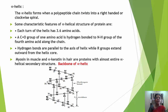The alpha helix forms when a polypeptide chain twists into a right-handed or clockwise spiral. Characteristic features: each turn of the helix has 3.6 amino acids. A CO group of one amino acid is hydrogen bonded to the NH group of the fourth amino acid along the chain. Hydrogen bonds are parallel to the axis of the helix, while R groups extend outward from the helix core. Myosin in muscle and alpha-keratin in hair are proteins with almost entirely alpha helical secondary structure.